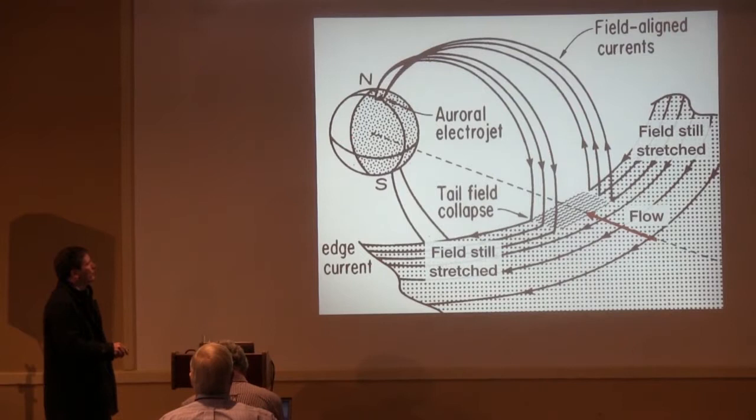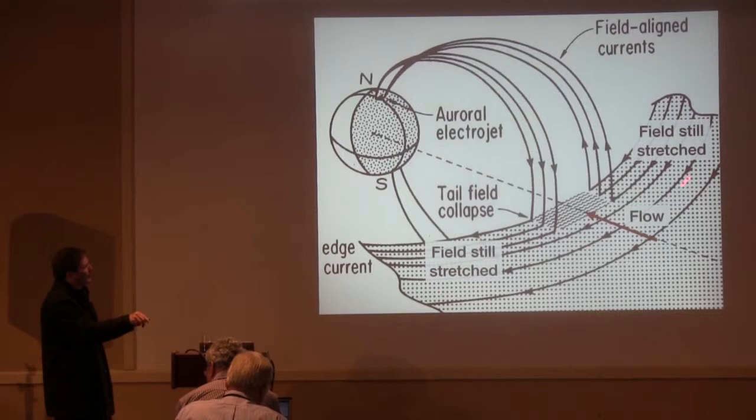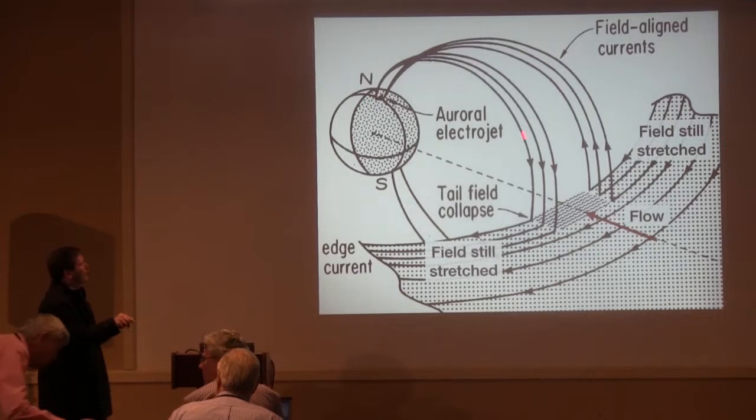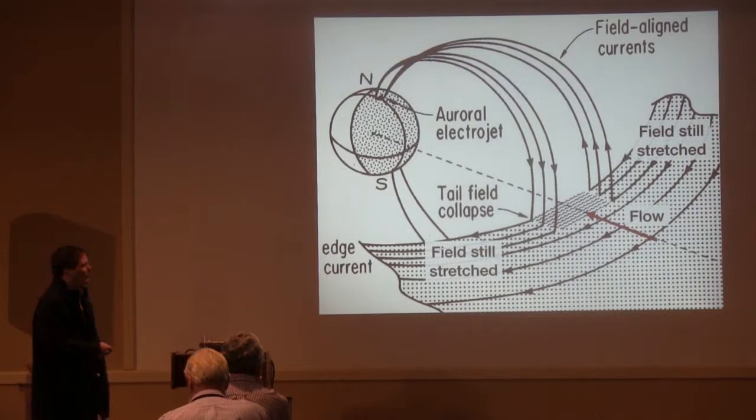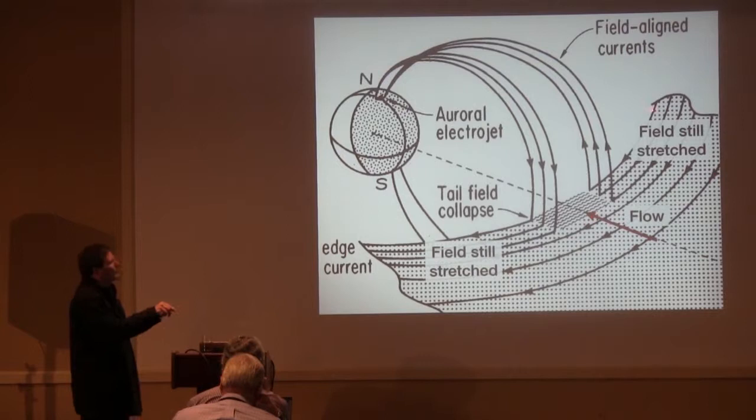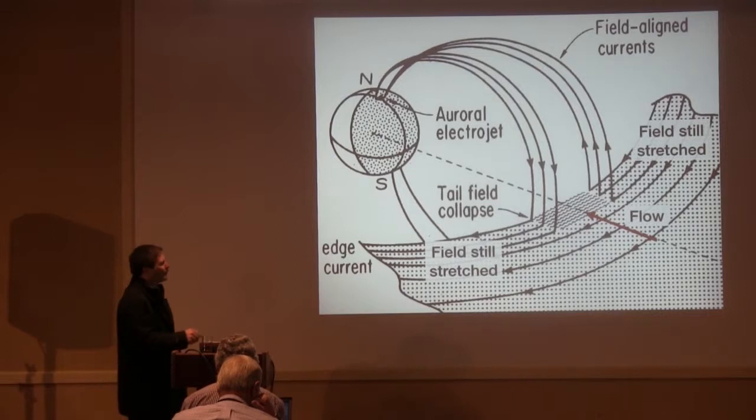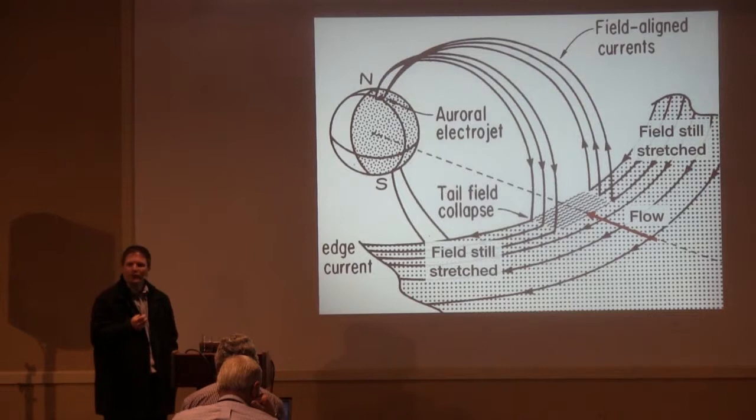So a little bit more detail on substorm current wedge if you're not familiar with it. Again, this is the original picture. We have here the current lines, lines of current. These are the tail sheet current. These are field line currents going into the ionosphere on the eastern edge, out of the ionosphere on the westward edge. In the original picture, it was described as a short circuit of the crosstail current. I don't particularly like that description because it treats it as currents, like wires. It doesn't really tell you why things are flowing.